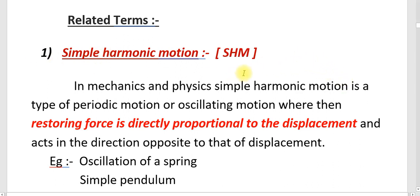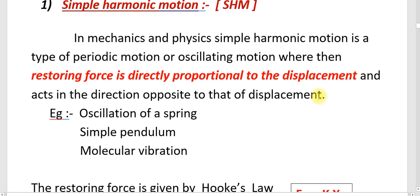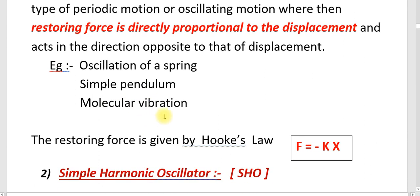The first term is simple harmonic motion, abbreviated as SHM. It is a type of periodic or oscillatory motion where the restoring force is directly proportional to the displacement and acts in the direction opposite to that of the displacement. Some examples are oscillation of a spring, simple pendulum, and molecular vibration.